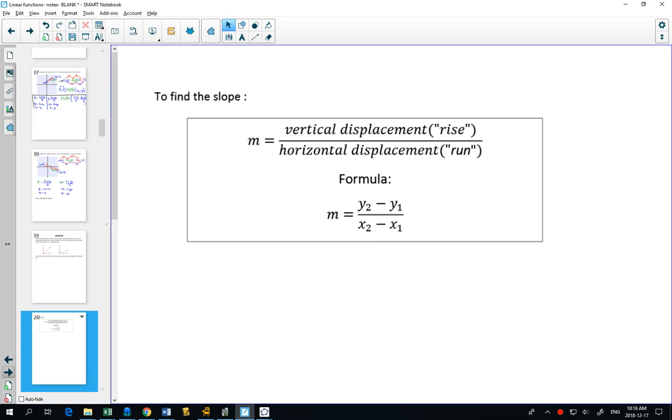We've seen this formula already. We've talked about it as the slope being rise over the run. And if we think about what's happening when we have two points, if I have one point here and one point here, this is my X1Y1 point, and this is my X2Y2 point.